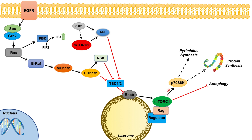As we can see, the RAS-RAF-MEK-ERK pathway can lead to the activation of the mTOR complex 1 pathway, which drives downstream effects including pyrimidine synthesis, protein synthesis, and inhibition of autophagy.